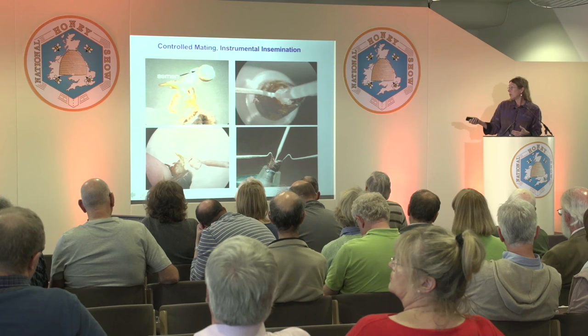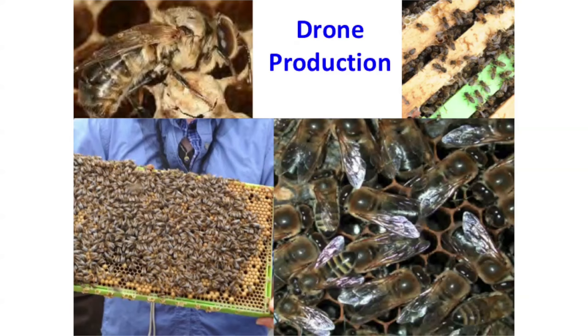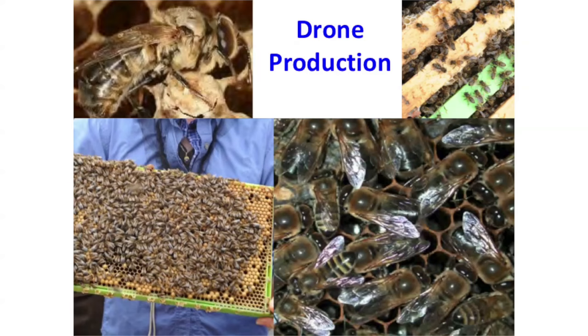I think this is the most difficult part of the whole program: drone production. You want large numbers of drones from the colonies you select, and to take those to maturity you need strong, healthy colonies. Given the chemical residues and the pathogen loads in colonies we now have to face today, this can be a tall order. I pay a lot of attention to drone production — I really push it early spring and into late August as my season starts ending. You have to take care with the varroa build-up.